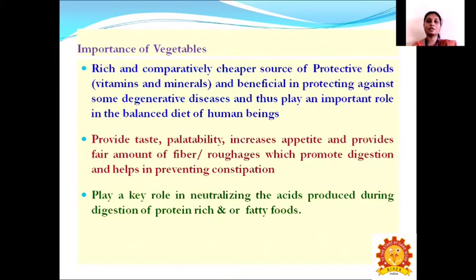Next we see about the importance of vegetables — why we have to grow them. Vegetables play a major role in our human diet as they are very rich in vitamins and minerals, and are a comparatively cheaper source of these nutrients. They are also beneficial in protecting against degenerative diseases and play an important role in the balanced diet of human beings.